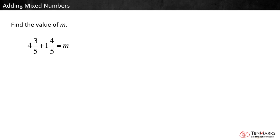4 and 3 fifths plus 1 and 4 fifths is the same as 4 plus 3 fifths plus 1 plus 4 fifths. We can change the order of the addends without changing the sum. So let's add the whole numbers first, then add the fractions.